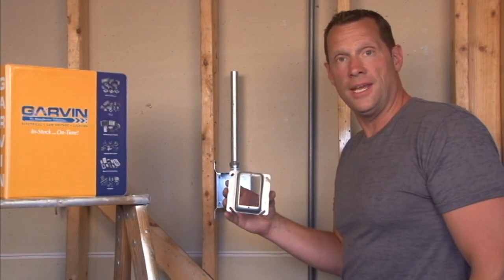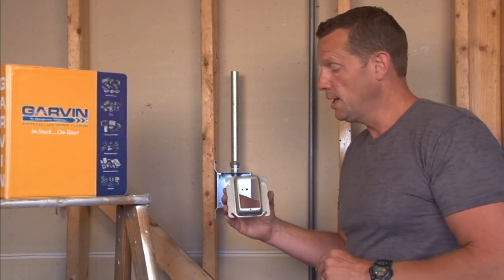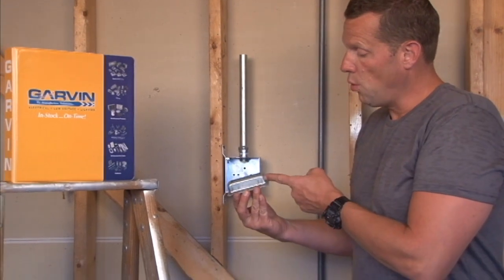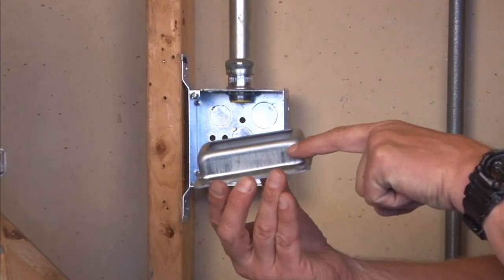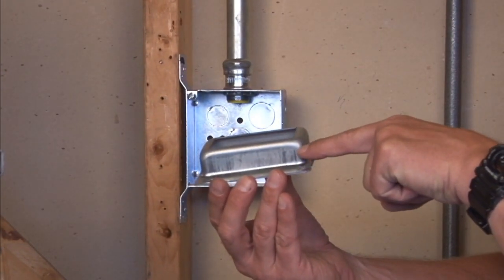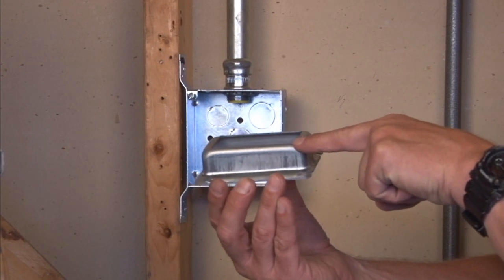Part number 52C15 is a single gang plaster ring that is raised one inch for a variety of wall thicknesses that accumulate to one inch in depth.